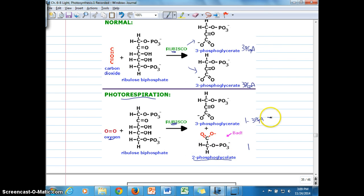So then the 3-PGA does go on to form G3P. But if you compare the output from normal circumstances to under photorespiration, you can see that we have 50% reduction